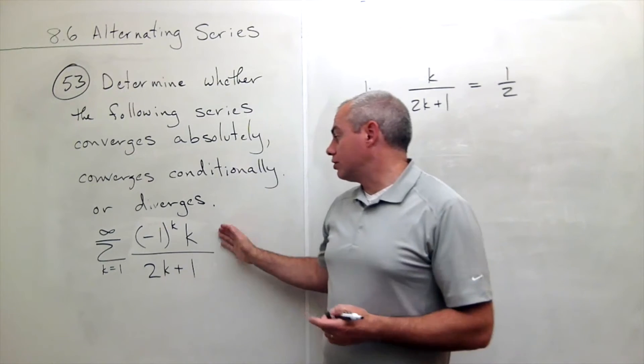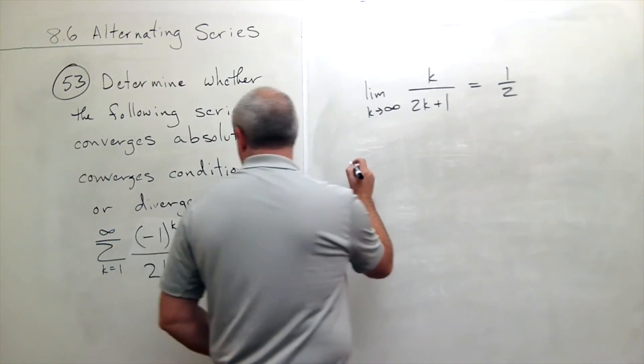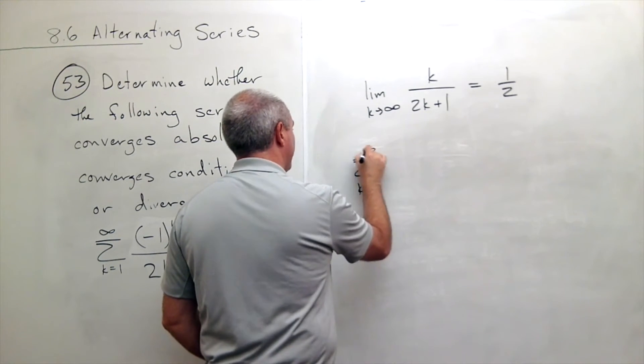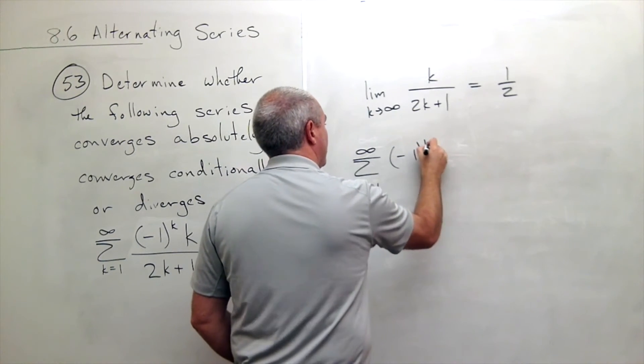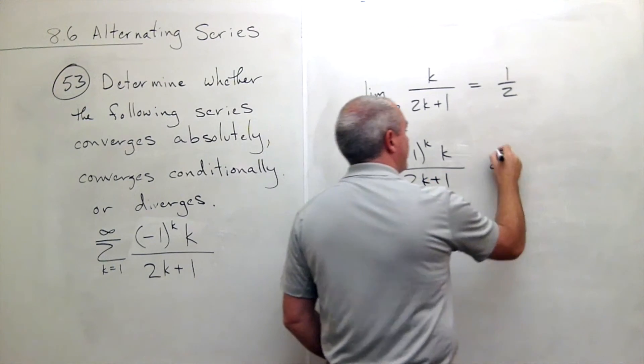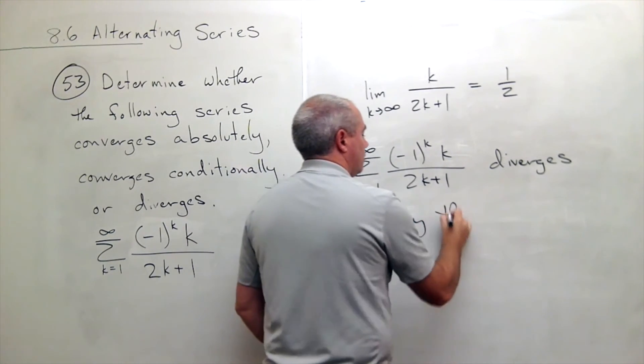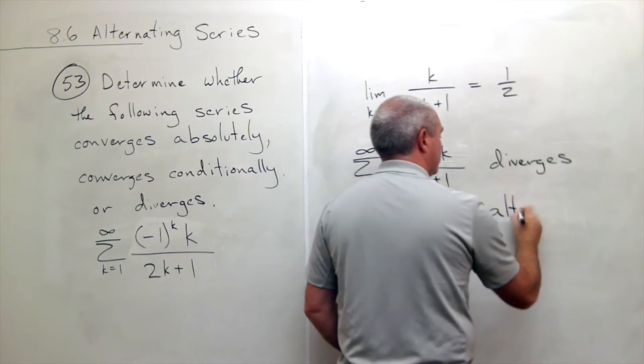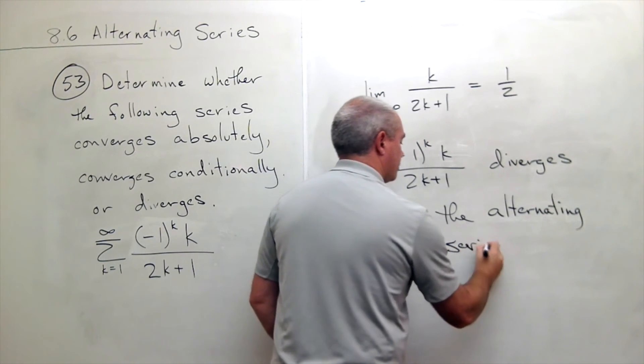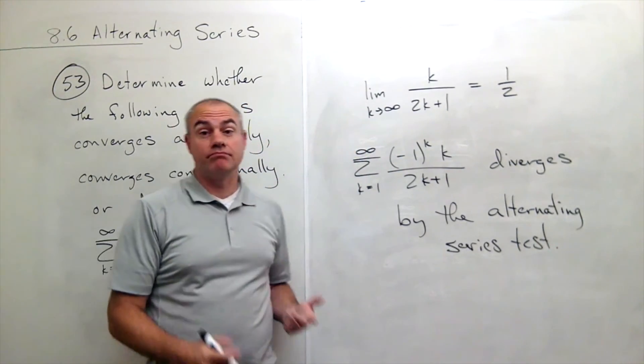Okay, so just by using a quick alternating series test, I can say that the sum k going from 1 to infinity of negative 1 to the k times k over 2k plus 1 diverges by the alternating series test. And so this guy diverges.